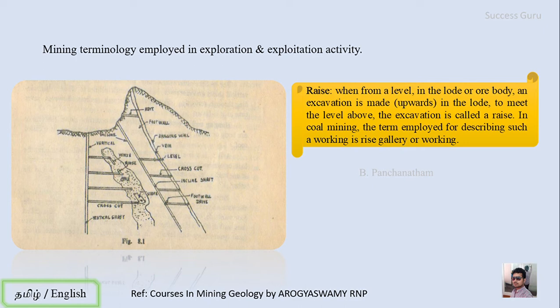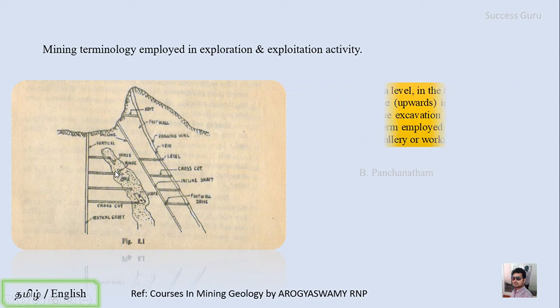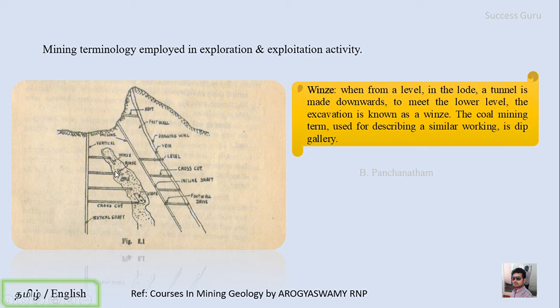The next term is rise: when from a level an excavation is made upward in the lode to meet the level above, that excavation is called a rise. In coal mining the term for such working is rise gallery. The next term is winze: when from a level a tunnel is made downward to meet the lower level, the excavation is known as a winze. In coal mining the equivalent term is deep gallery. So if the working is towards the lower level it is winze; if towards the higher level it is rise.